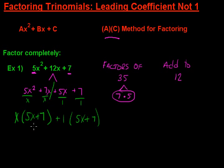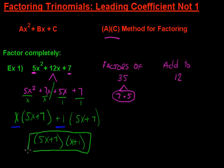And so our final answer is the parentheses make up one factor, 5x plus 7. And the values on the outside make up a second factor, so x plus 1.